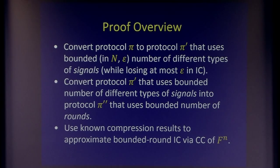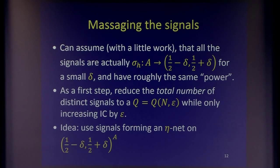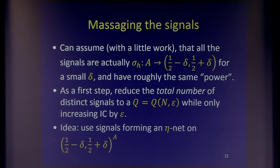The proof proceeds in three steps. First, reduce the number of types of signals used: the number of different functions should be bounded in terms of n and epsilon. Second, convert that into a protocol using a bounded number of rounds. Third, from there, compute the bounded-round information complexity. As a first step, with little loss we can make all signals very weak, because you can always take a signal and break it into many much weaker signals that do the same thing.